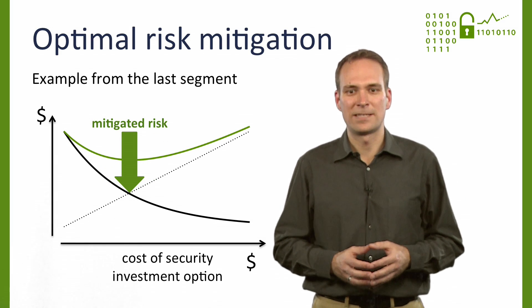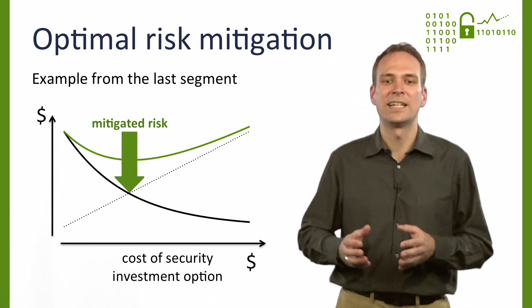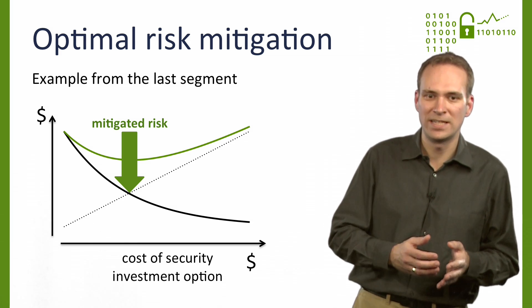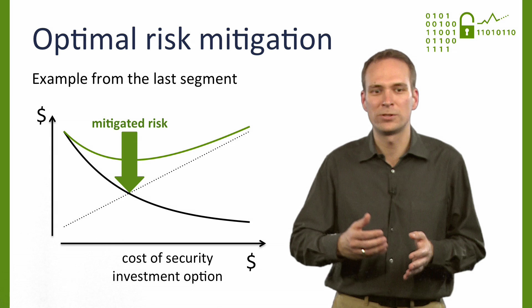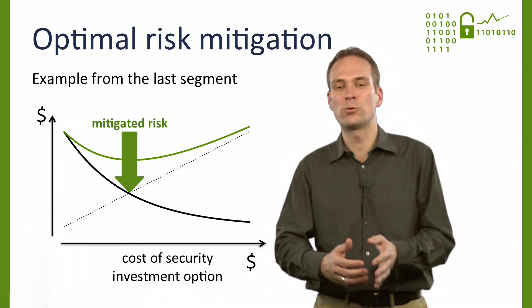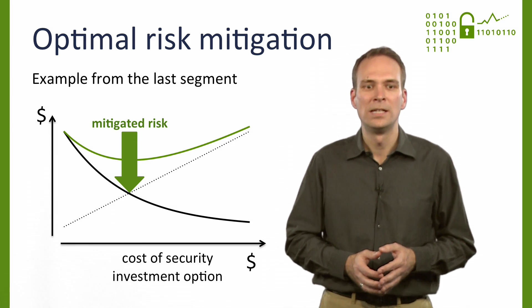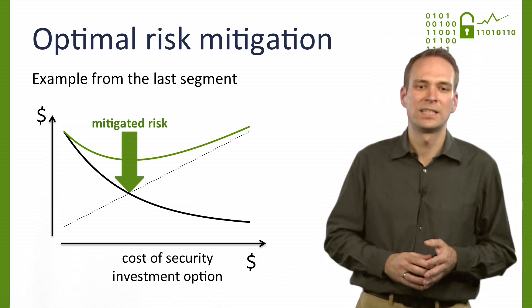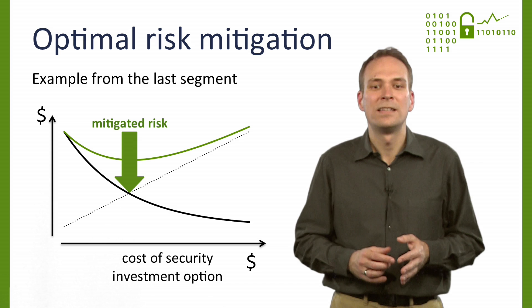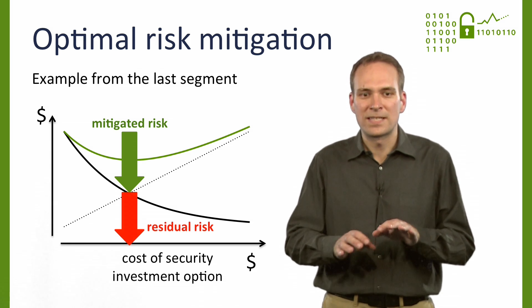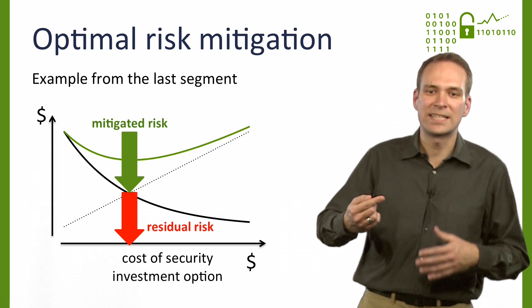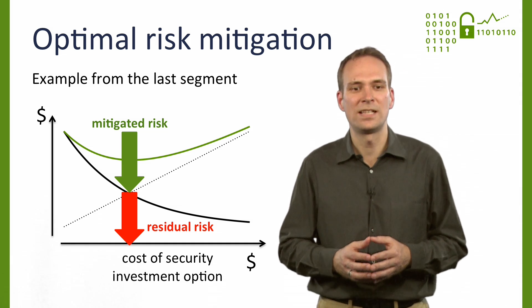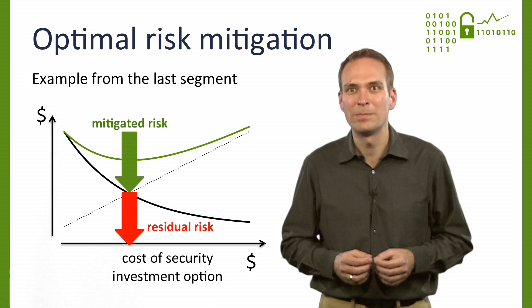Successful security investment corresponds to risk mitigation, the first instrument. Risk mitigation tries to reduce the likelihood and severity of loss events by protecting vulnerable assets with technical and organizational measures. But recall from the last segment that an optimal level of information security investment does not mitigate the risk completely, because at some point the extra cost of more protection exceeds the expected losses without that protection. As a result, there remains residual risk to be managed.